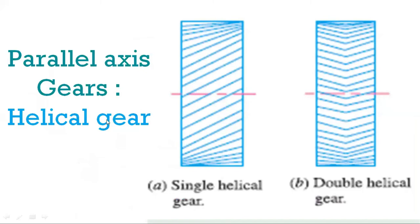Another variety of parallel axis gears is the helical gear, where the teeth are inclined to the gear axis — making some angle to the axis called the helix angle. In single helical gears, the teeth are inclined in one fashion. If one side is a right-hand helix and the other side has the opposite inclination — a left-hand helix — so the same gear is provided with teeth of both right-hand and left-hand helix, then it is called a double helical gear.